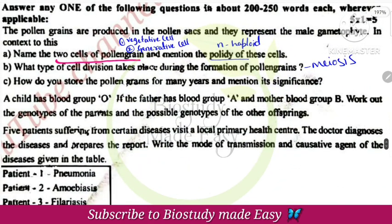Pollen grains are stored in liquid nitrogen at minus 196 degrees Celsius in cold storage. The significance of this is for use in hybridization techniques.